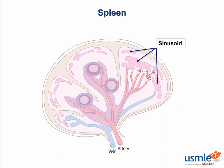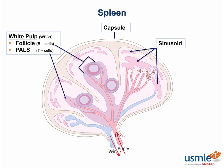The spleen is broken down into sections of sinusoids. Just like lymph nodes, there is a surrounding fibrous capsule. Blood filters into the spleen via arteries and leaves via the veins. This white section is called white pulp and contains follicles with embedded B cells, similar to lymph nodes.